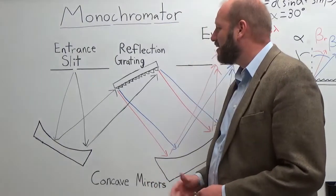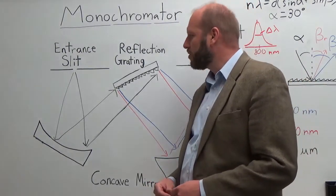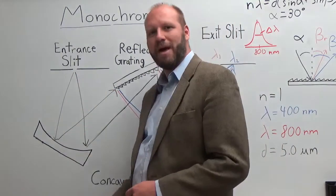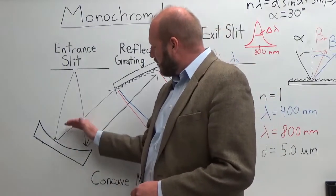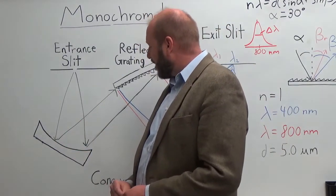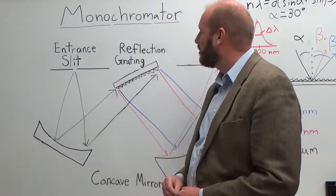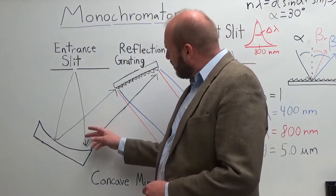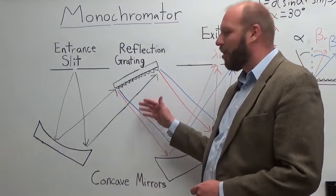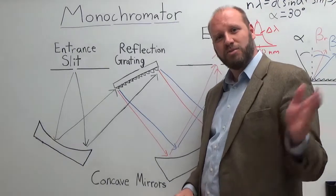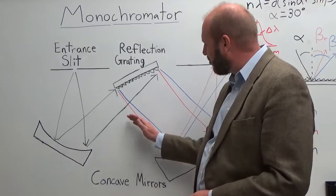A common monochromator design is the Churney-Turner design that I have drawn here on the board. The Churney-Turner design has an entrance slit where we let polychromatic light of many colors into our system. This then hits a concave mirror whose job it is to create parallel rays or collimated light that will then strike our diffraction grating. This light needs to be parallel so that it can hit our diffraction grating all at the same angle. Isaac Newton used the sun as his parallel light source when he did his original experiments on optics.